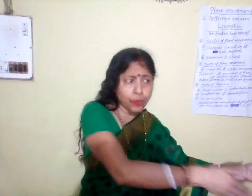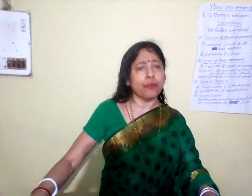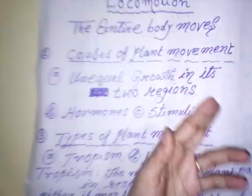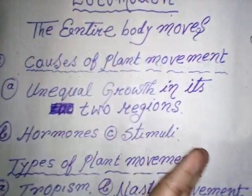Now, a few factors are responsible for the movement of plants. What are these factors? These are: unequal growth in the two regions, hormones, and stimuli. I will discuss their role one by one as I am proceeding.